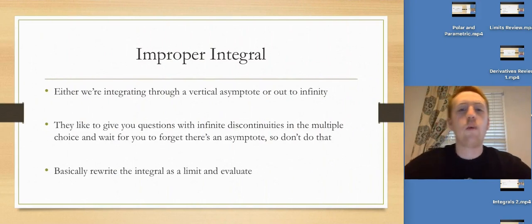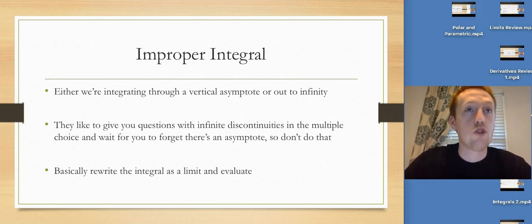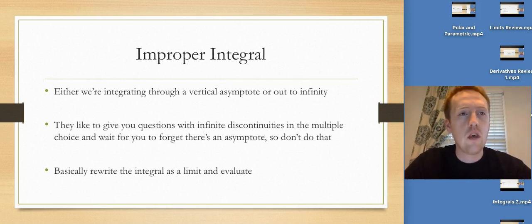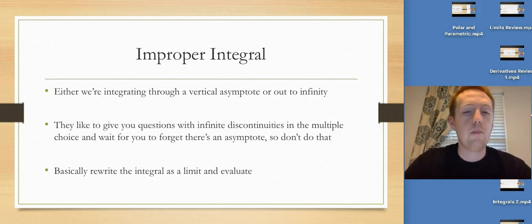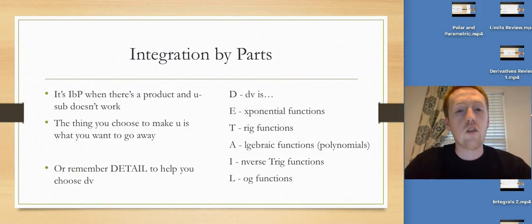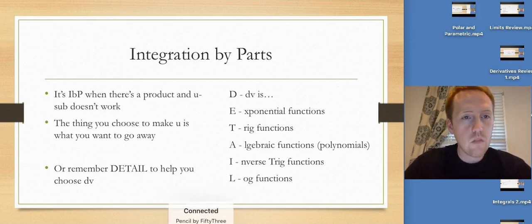So let's look at improper integrals. What that means is we're either going to be integrating out to infinity or negative infinity, or we're going to try to be integrating through a vertical asymptote or to a vertical asymptote. On the multiple choice, they like to give you questions where there's a vertical asymptote somewhere in the bounds. They like to give that to you and just expect you to just evaluate it without thinking about it. So you need to be careful. If you're given an integral that you know has a domain restriction, make sure that your bounds don't cross that domain restriction. And if they do, you need to do an improper integral to see if it converges. But basically, the idea is rewrite the integral as a limit and evaluate.